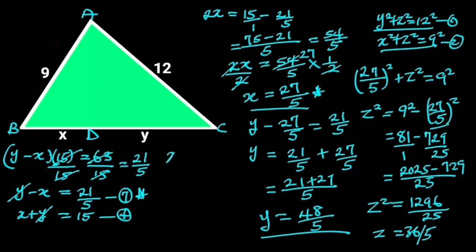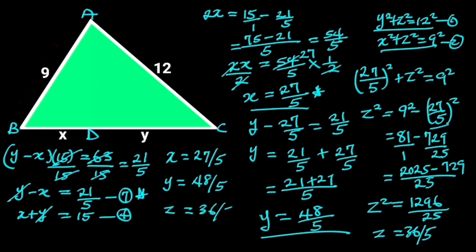Hence, x is equal to 27 over 5, y is equal to 48 over 5, and z is equal to 36 over 5. Thanks for watching.